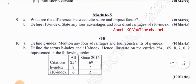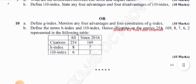A table is given in which all citations is listed as 254, and since 2016 it is 169. H index is mentioned as 8, and since 2016 it is 7. I10 index is mentioned as 6, and since 2016 it is 2. We need to illustrate H index and I10 index using these entries.